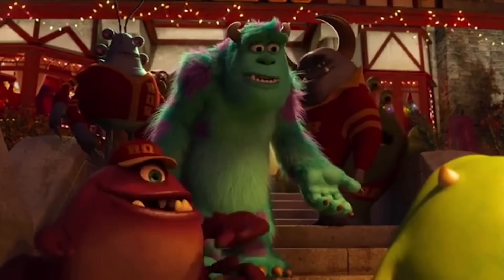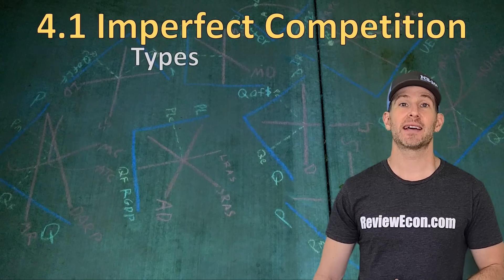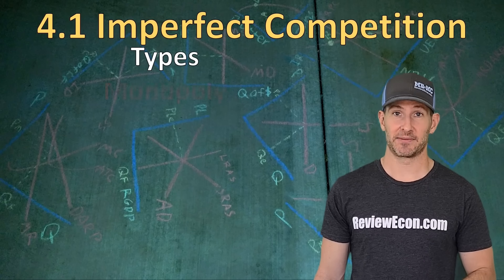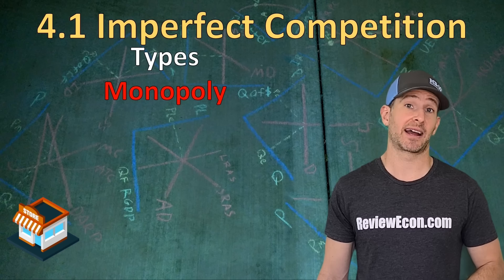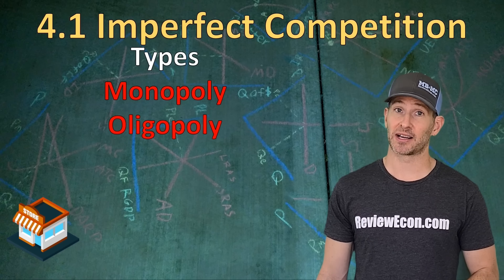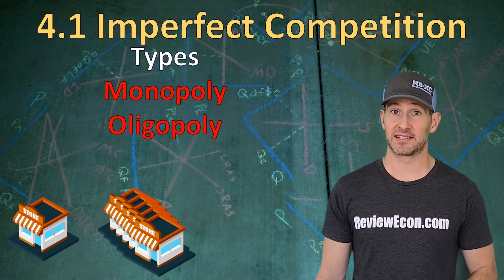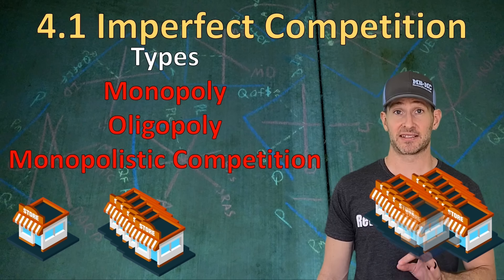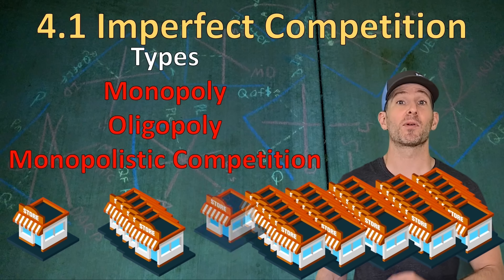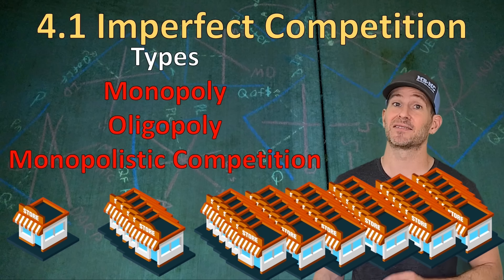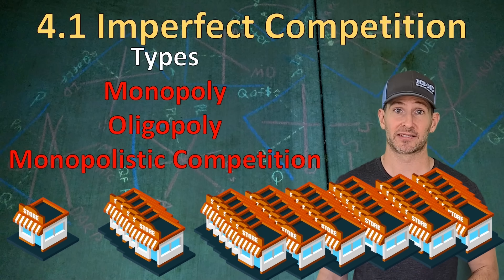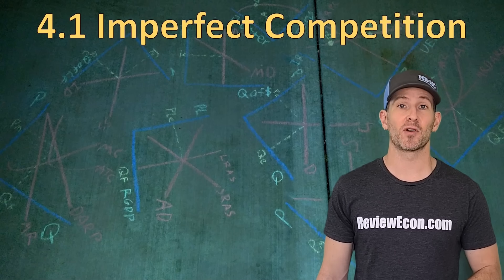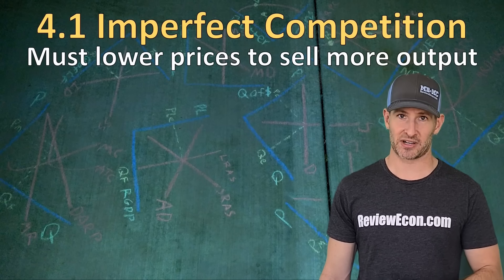Let's get into the content. There are three types of imperfect markets. The first one is monopoly — that's where one business dominates an entire industry. The second one is oligopoly, where a few businesses dominate a market. The third one is monopolistic competition, which is similar to perfect competition, but products are different, with lots and lots of sellers selling similar products. One key aspect of imperfectly competitive markets is that firms must lower prices in order to sell more output.